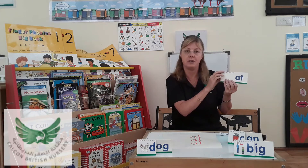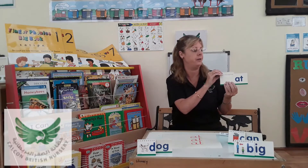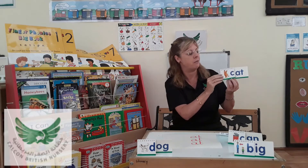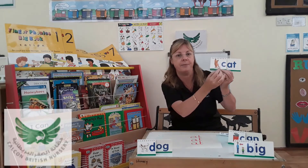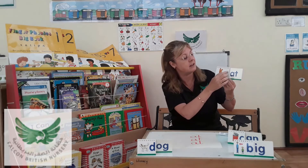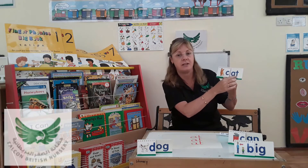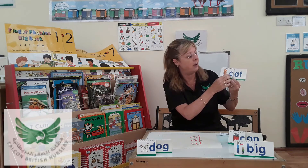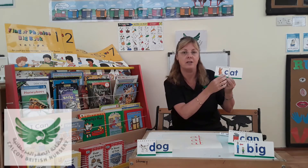So what we can do is actually put a letter in front of this to form another word. Who knows what this letter is? Well done — it's c. So we have c-a-t. That makes the word 'cat'.